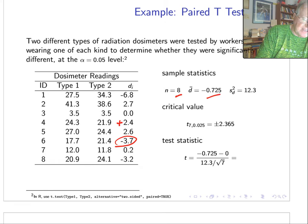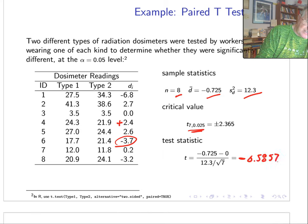From those, we'll calculate the sample statistics. There were eight differences. The average difference was minus 0.72, and the standard deviation—I'm sorry, variance—was 12.3. The critical value for a two-sided test with seven degrees of freedom is plus or minus 2.365. The test statistic—so it's going to be negative—the test statistic works out to be 0.5857, which does not exceed the critical value.